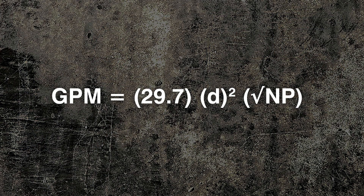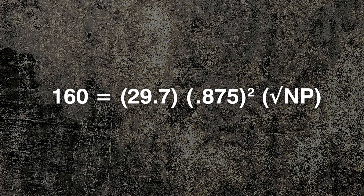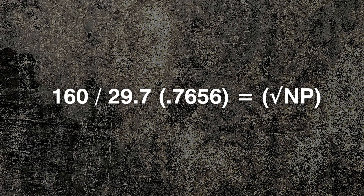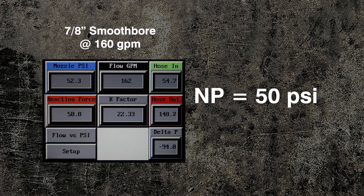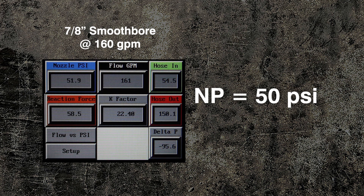Comparing the formula to our flow test results, we see that flowing at 160 GPM with a 7/8-inch smoothbore, we should be getting about 50 PSI nozzle pressure. As you can see, reality matches the formula.